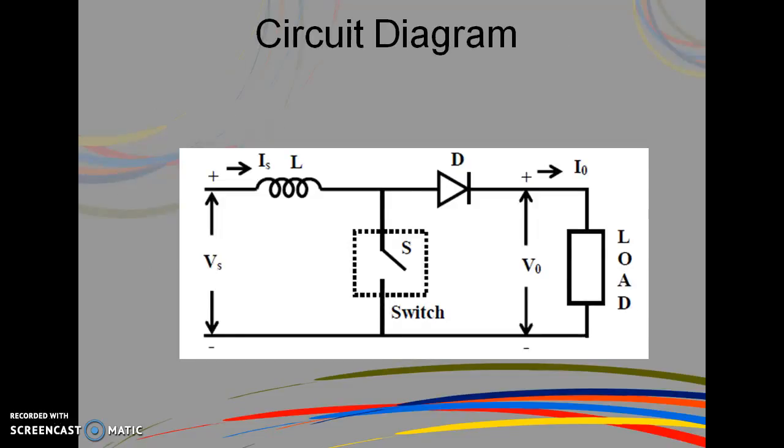A boost converter is shown in the figure. Only a switch is shown here, for which a device belonging to a transistor family is generally used. Also a diode is used in series with the load. The load is of the same type as given earlier. The inductance of the load is small. An inductance L is assumed in series with the input supply. The position of the switch and diode in the circuit may be noted as compared to their position in the buck converter.